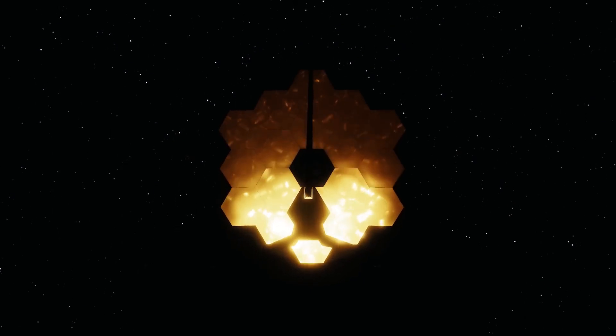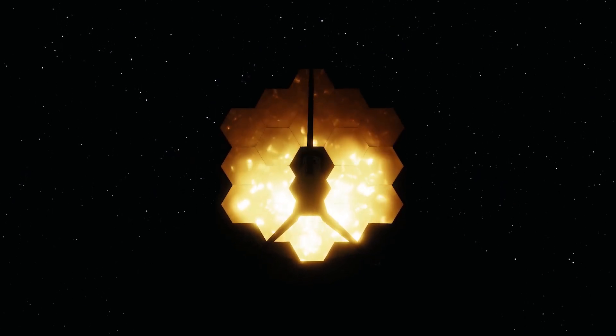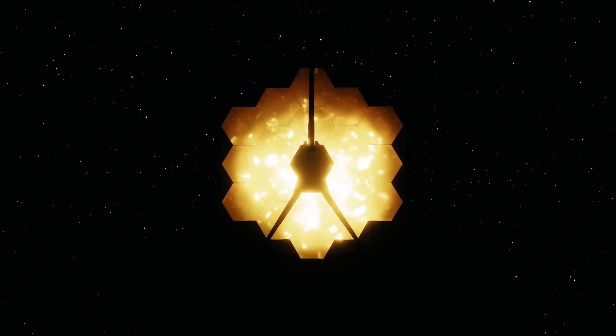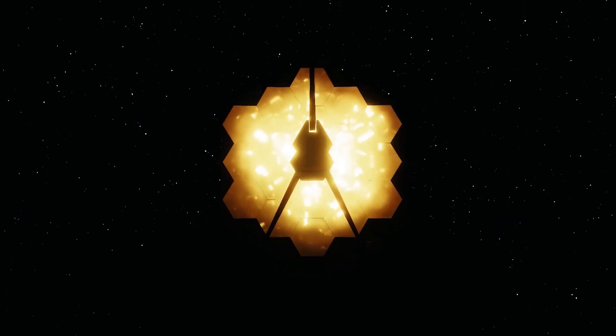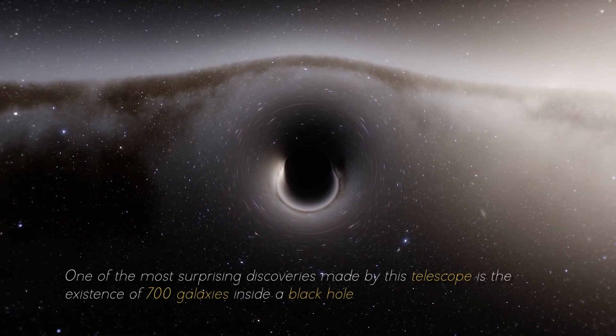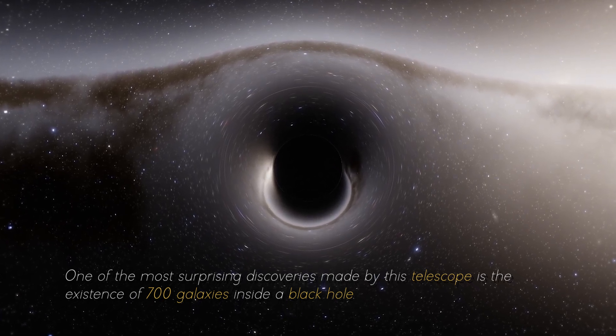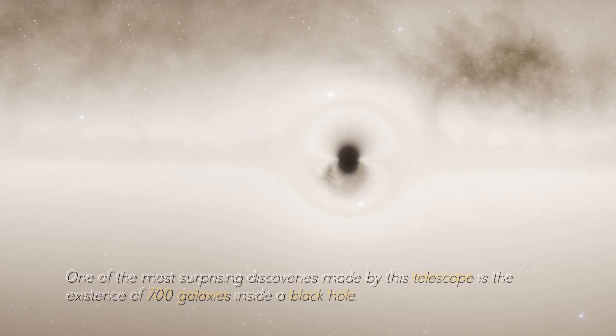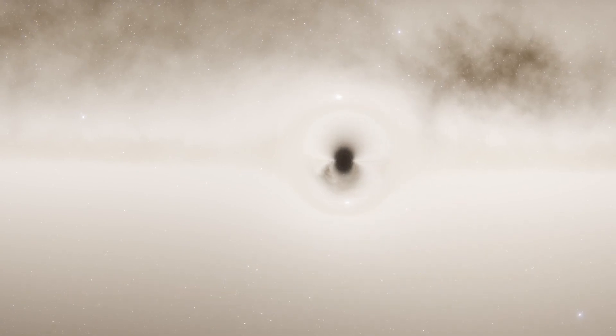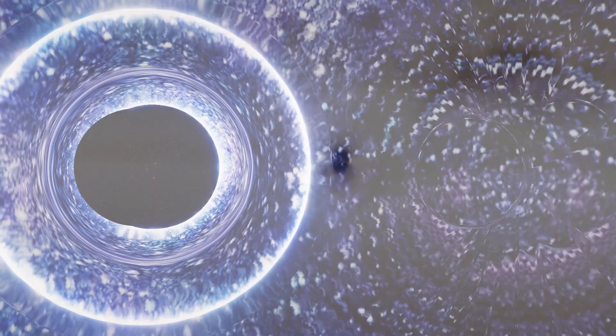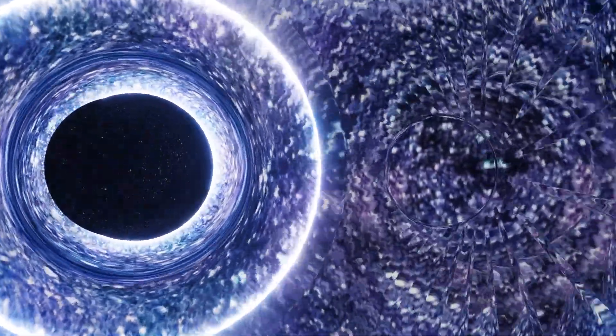However, the James Webb Space Telescope has the ability to observe beyond what any other technology has yet achieved. One of the most surprising discoveries made by this telescope is the existence of 700 galaxies inside a black hole. This finding challenges the conventional understanding of how black holes work.